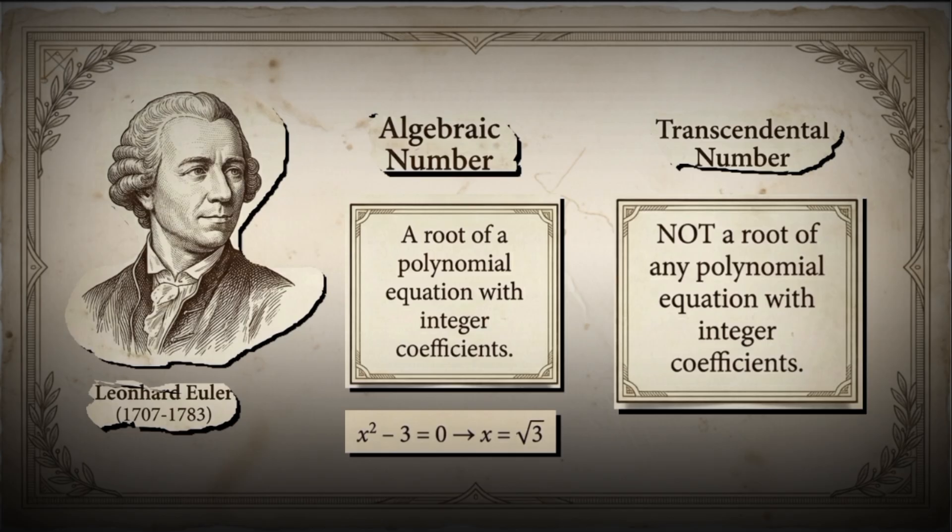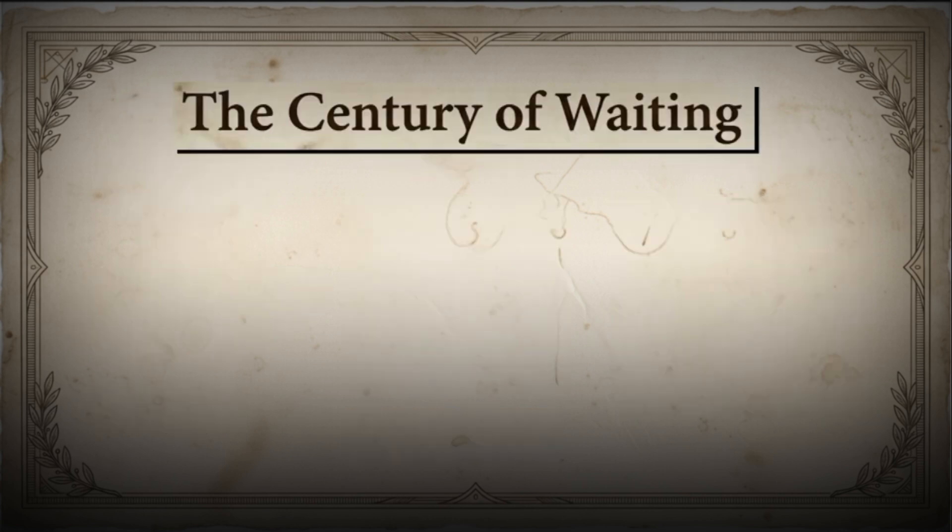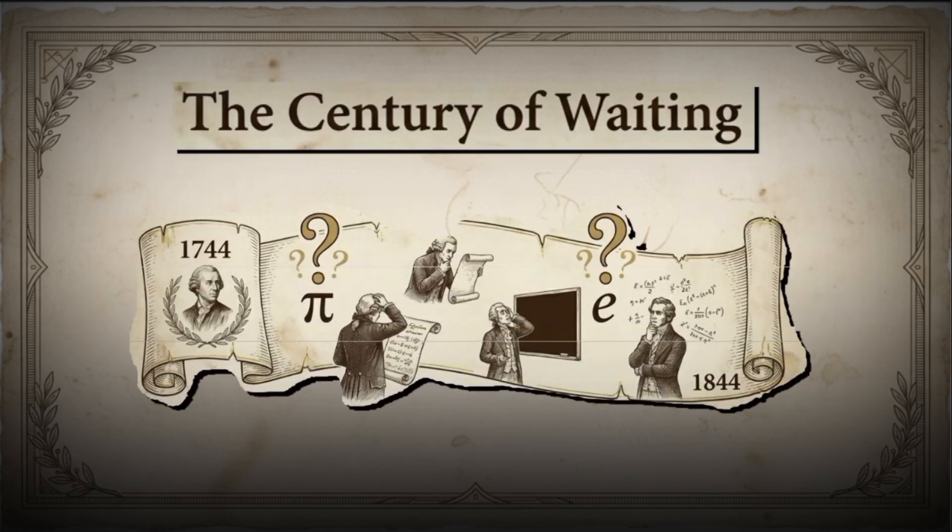Euler said, we rely on intuition. Well, that's not very rigorous. After Euler proposed the concept of transcendental numbers in 1744, for an entire century, no one could rigorously prove they exist.